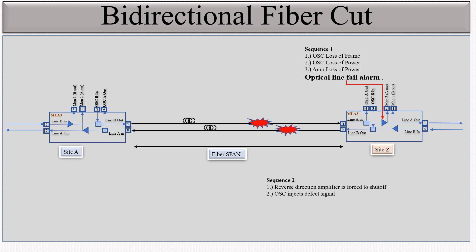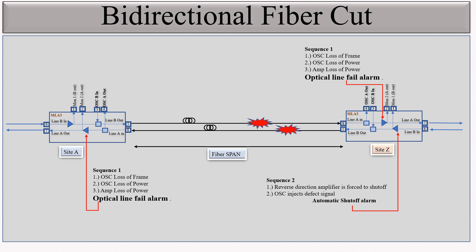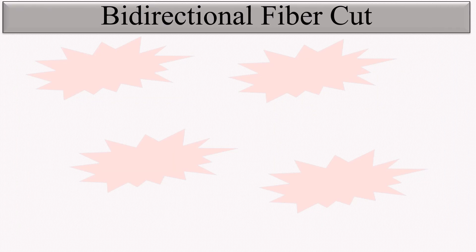In sequence 2, the reverse direction amplifier is supposed to set off and inject OSC defect signals — automatic set-off appears on this amplifier. Now what happens: the OSC defect signal is injected, but the OSC signal is also not received on this port. Port number 8 does not receive the OSC signals and does not receive the amplifier power, so the same three conditions occur: OSC loss of power, OSC loss of signal, and amplifier loss of power. This causes optical line fail alarm to appear on this amplifier as well. Similarly, the reverse direction amplifier is forced to set off because it receives optical line fail, and it also injects an OSC defect signal, so automatic set-off appears there too.